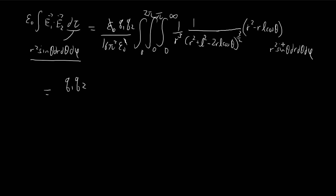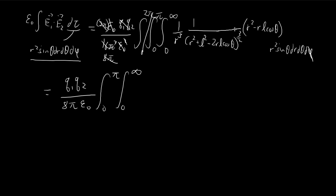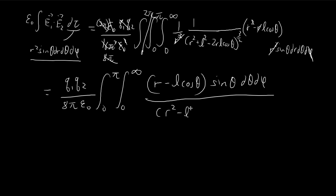Integrating φ first — since there are no φ terms — gives a factor of 2π, which partially cancels the 16π² to leave 8π, so the prefactor becomes q1q2 over 8πε. The r² from the volume element cancels with the r² denominator leaving 1/r, and that r cancels with the r in the numerator, leaving us with the integral of (r − l cosθ) sinθ over (r² + l² − 2rl cosθ)^(3/2) dθ dr.